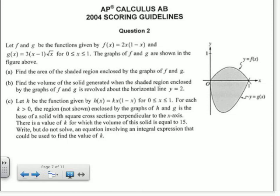Okay, now we're going to do 2004, question number 2 from the AP calculus exam. So it says, let f and g be the functions given by f of x equals 2x times 1 minus x, and g of x equals 3 times x minus 1 times square root of x between 0 and 1. The graphs of f and g are shown in the figure. Part A says, find the area of the shaded region enclosed by the graphs of f and g.